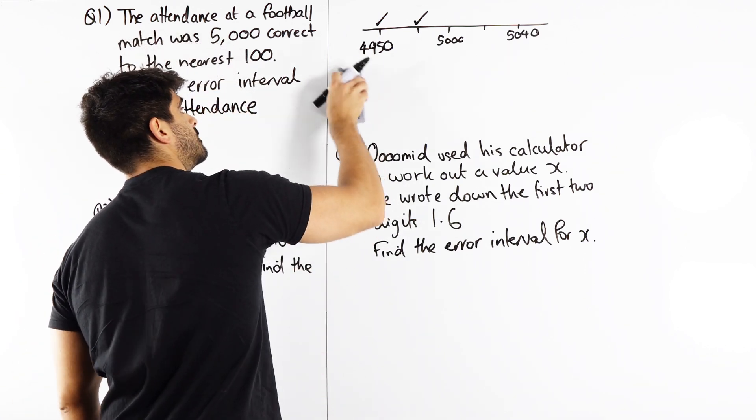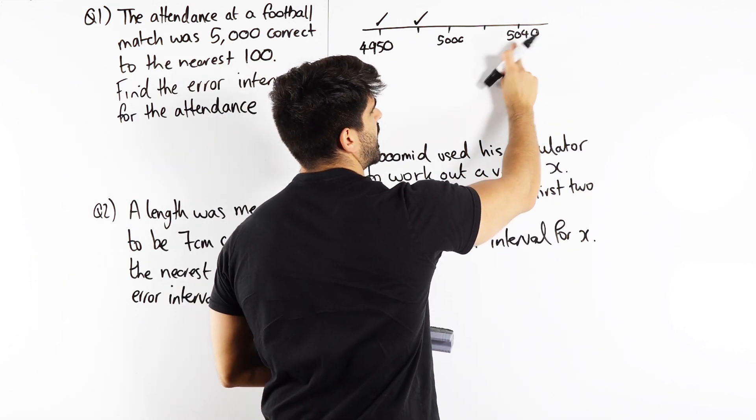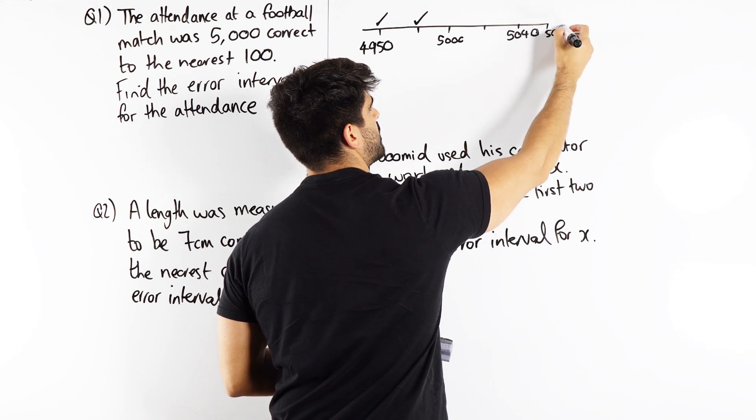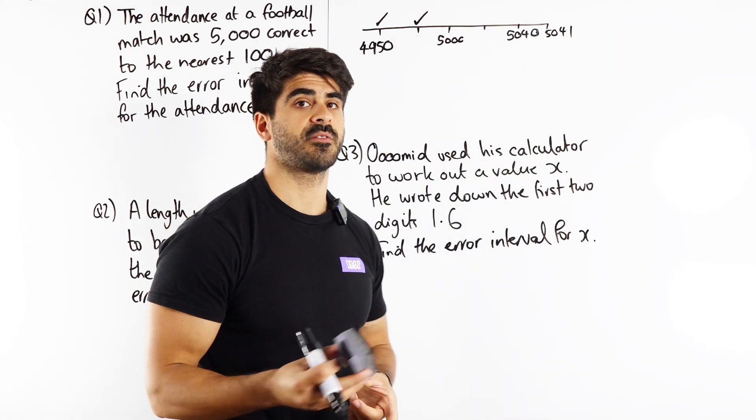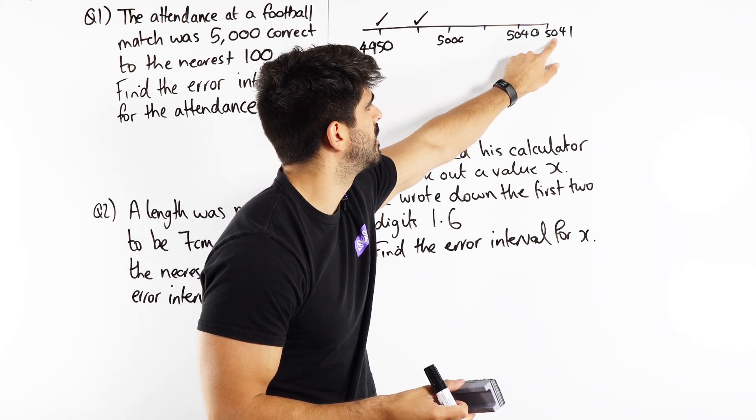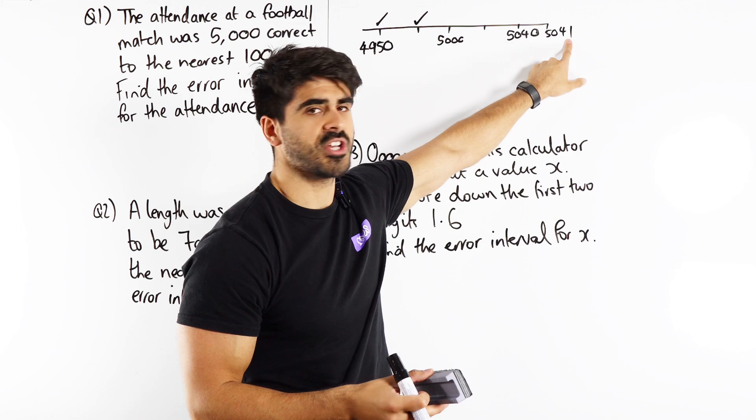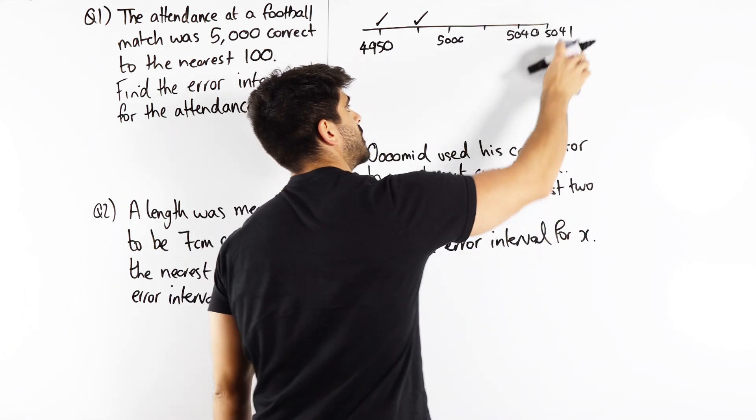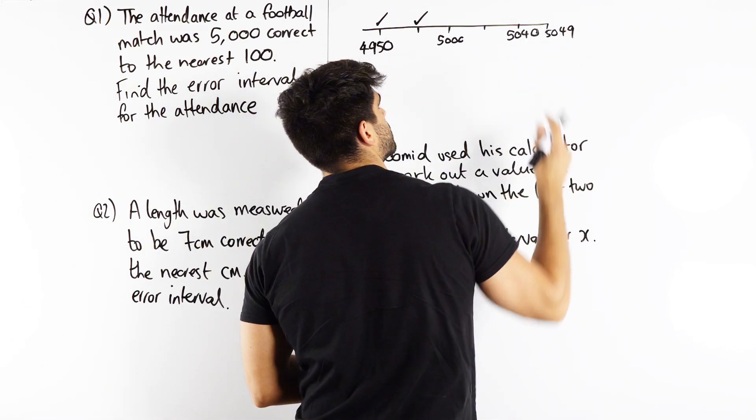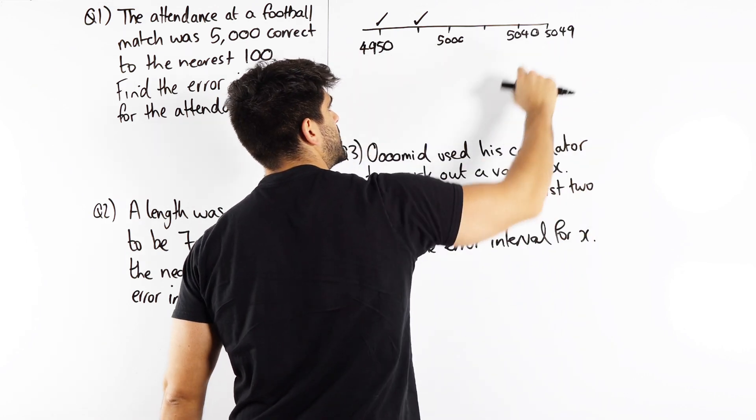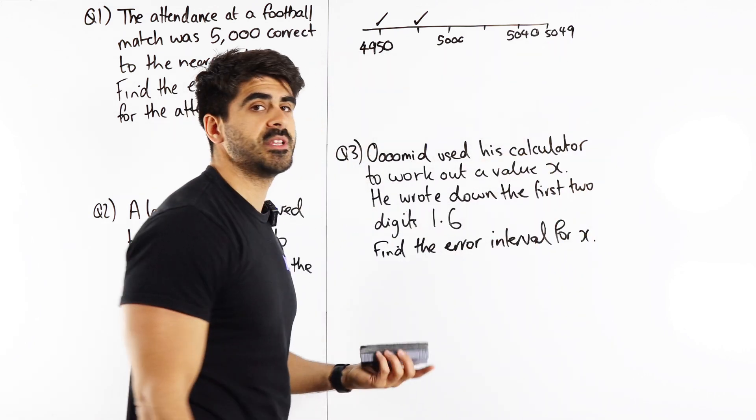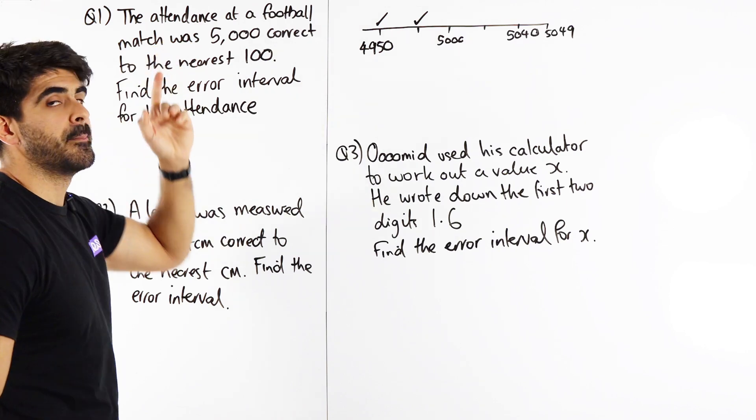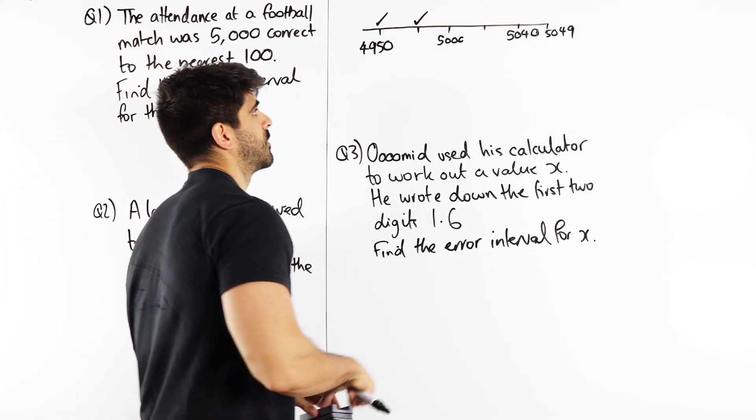However this number here I can actually do a bigger number. The diagram is not to scale. 5041. That still rounds to 5,000 to the nearest hundred because you're looking at this number. The 4 keeps it the same. I could change that to a 2, a 3, a 4. In fact this number doesn't make a difference. It can go all the way up to 9. That 4 still keeps that the same. Now obviously here we're dealing with integers meaning whole numbers because we don't want the attendance but mathematically we can actually go further.